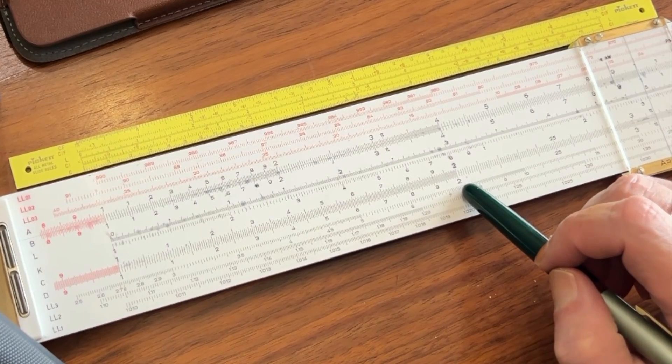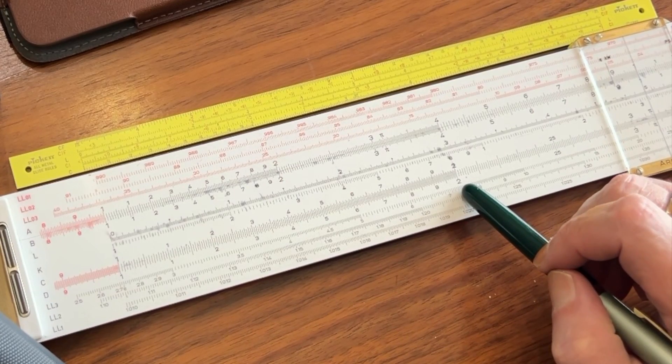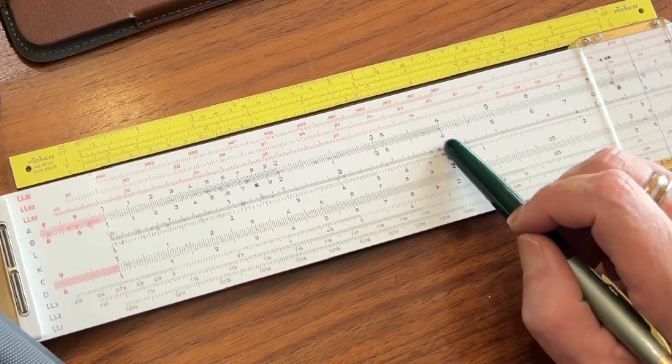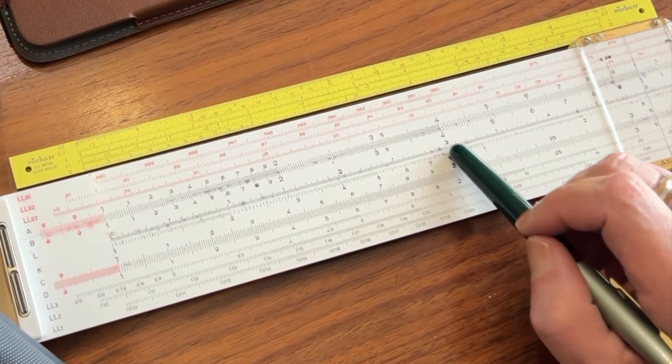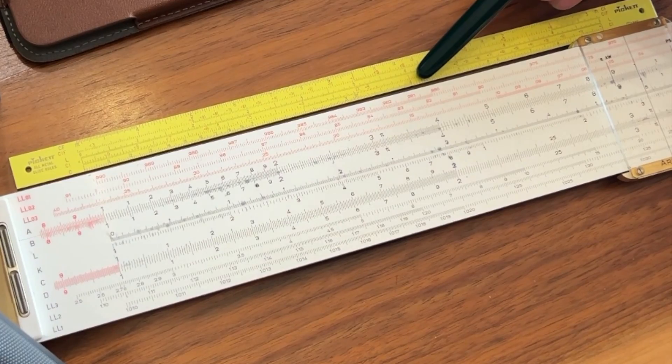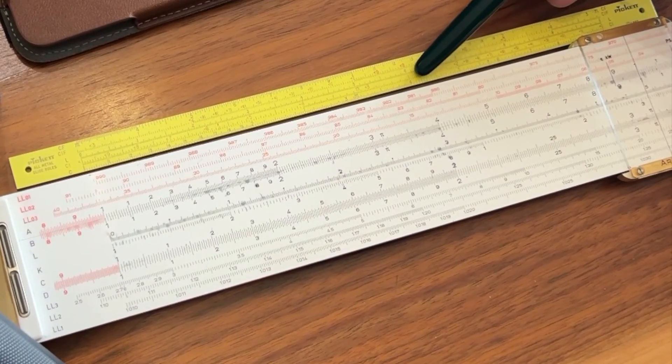Now, if I come down to the 20-inch C scale on the Aristo Studio and come straight up, you'll notice that I come to 4, which is the square of 2. And that would also correspond to the 4 on the C scale of my N500.